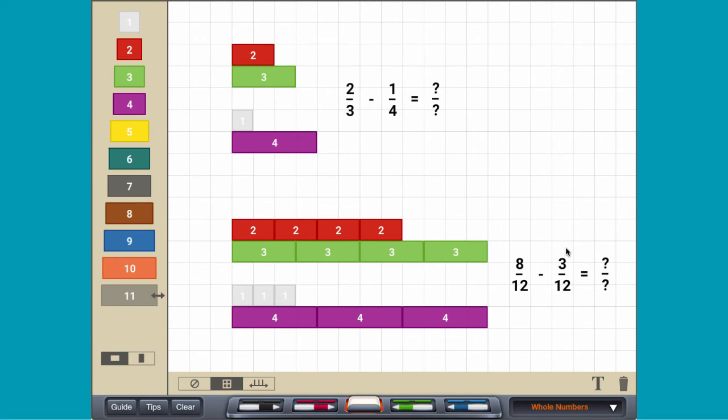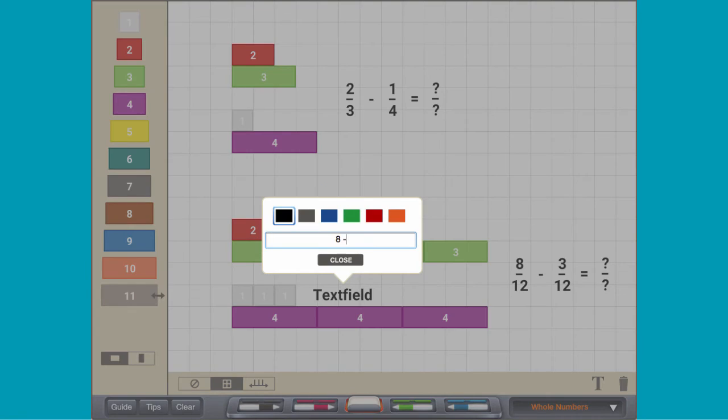Because the denominator represents the number of equal parts in a whole, and the numerator represents the number of parts in the quantity, subtract the numerator three from the numerator eight.